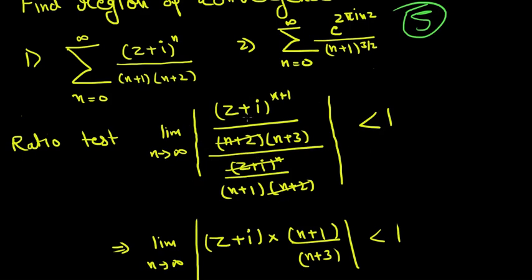Whatever comes out will be the region of convergence. Solving it: n+2 cancels with n+2, and n will be cancelled by (z+i) raised to n. We're left with only (z+i), and n+1 will go up.